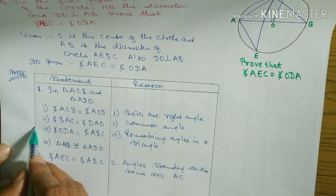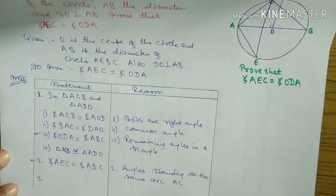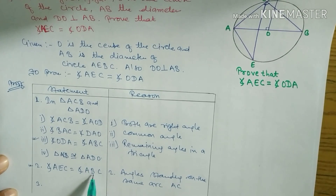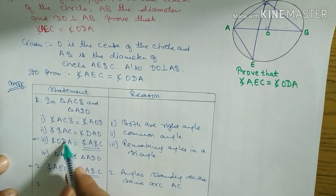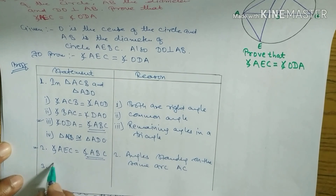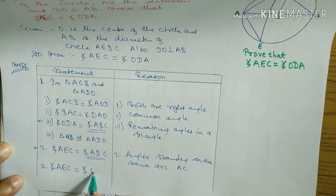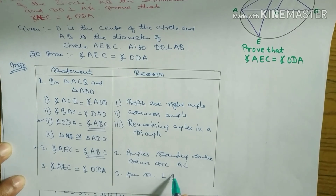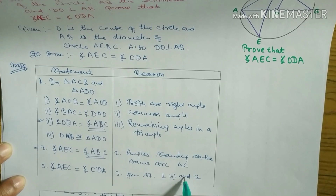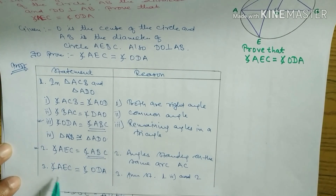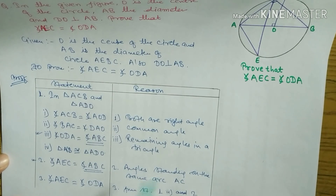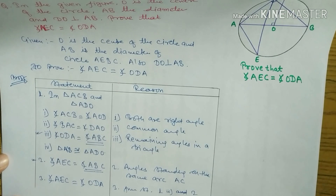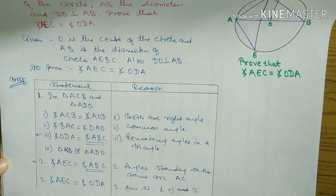From statements two and five: ABC appears in both, so when the right-hand sides are equal, the left-hand sides are also equal. Therefore, angle AEC equals angle ODA. From these two statements combined, we have proved that angle ACE equals angle ODA.